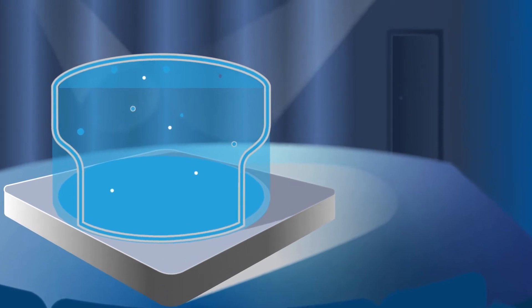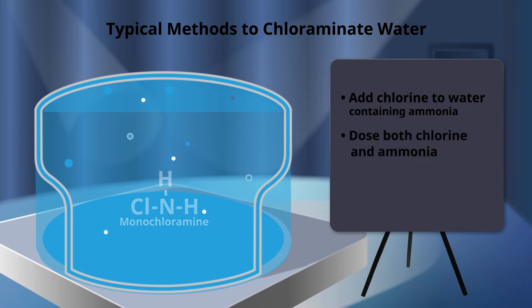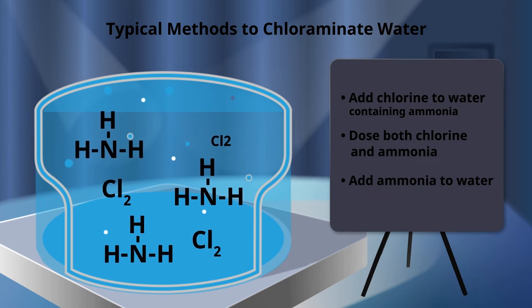When you chloraminate, you add either chlorine to water with existing ammonia, or dose both chlorine and ammonia together, or you can add ammonia to water that has already been chlorinated in the treatment plant or another utility and has some chlorine residual. In this example, let's pretend we are adding chlorine to water that already has ammonia.